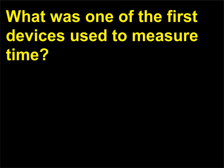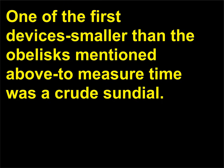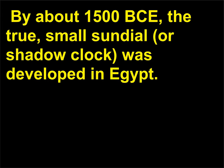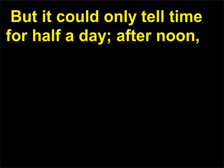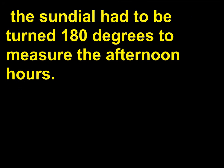What was one of the first devices used to measure time? One of the first devices smaller than the obelisks to measure time was a crude sundial. By about 1500 BCE, the true small sundial, or shadow clock, was developed in Egypt. It was divided into 10 parts, with 2 twilight hours marked. But it could only tell time for half a day; after noon, the sundial had to be turned 180 degrees to measure the afternoon hours.